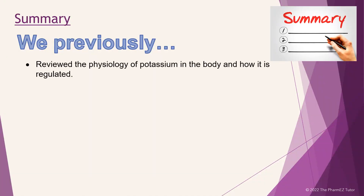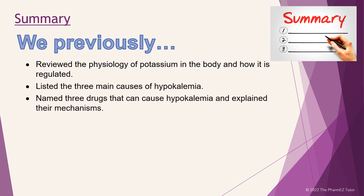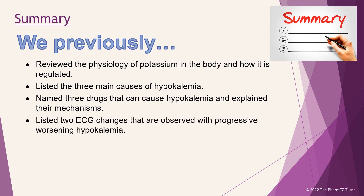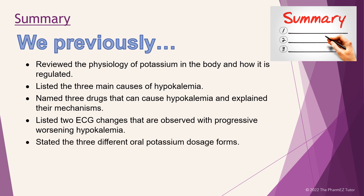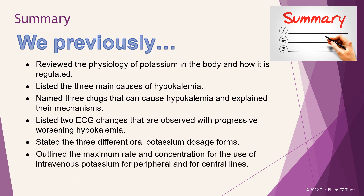In summary, we reviewed the physiology of potassium in the body and how it is regulated. We listed the three main causes of hypokalemia. We named three drugs that can cause hypokalemia and explained their mechanisms. We listed two ECG changes observed with progressive worsening hypokalemia. We stated the three different oral potassium dosage forms. And we outlined the maximum rate and concentration for intravenous potassium for peripheral and central lines.